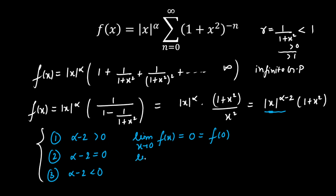For Case 2, when α−2 is exactly equal to 0, the limit as x tends to 0 of f(x) equals 1 times (1 + 0) which equals 1. This is not equal to f(0), which is 0. So this case does not give continuity — when α−2 equals 0, the function is not continuous because the limit equals 1 but f(0) equals 0.